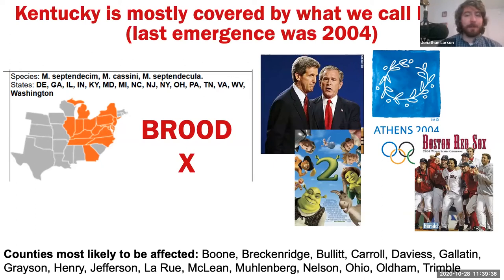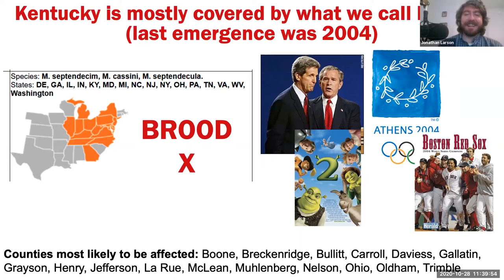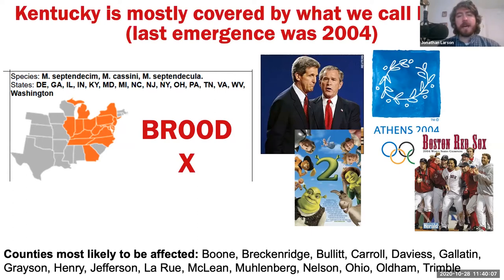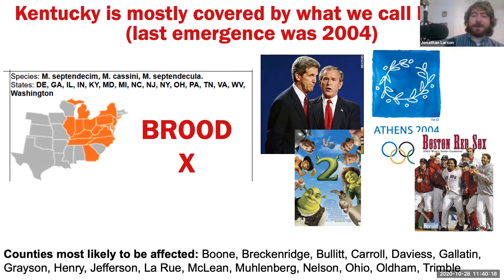Brood X last emerged in 2004 — back when we were having another presidential election, GW Bush versus John Kerry, the Olympics were in Athens, the Boston Red Sox won their first pennant in over a hundred years breaking the curse of the Bambino, and Shrek 2 was the number one movie. The insects that came out that summer mated, laid their eggs, and those nymphs have been below ground feeding very slowly since that time. In Kentucky, the counties most likely to be affected by this emergence will be Boone, Breckenridge, Bullitt, Carroll, Davies, Gallatin, Grayson, Henry, Jefferson, LaRue, McLean, Muhlenberg, Nelson, Ohio, Oldham, and Trimble. They generally like river corridor type counties and places with a lot of old forest growth because they need trees that have been around for a long time.